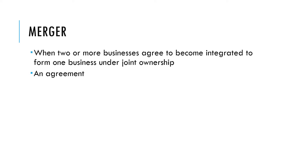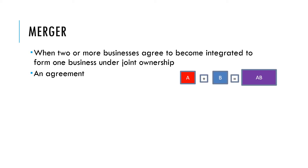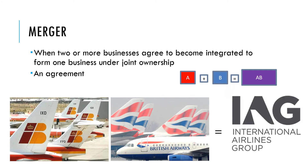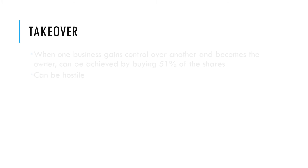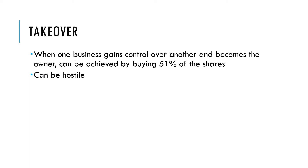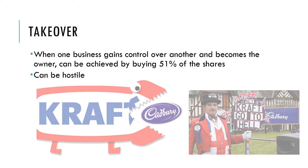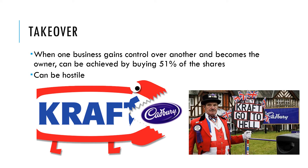A merger is when two or more businesses agree to become integrated — joined to form one business under joint ownership. An example is the agreement between Iberia and British Airways to merge and become International Airlines Group. A takeover is when one business gains control over another by buying 51% of the shares, and can sometimes be a hostile takeover — where the management of the smaller company doesn't want to be bought. An example is when Kraft bought Cadbury, even though many workers and managers at Cadbury didn't want that.